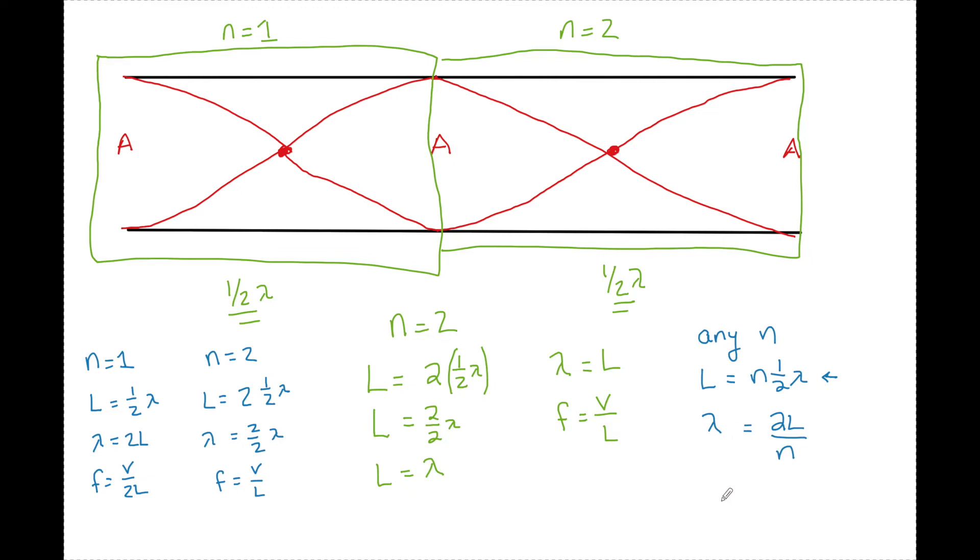Then for any single N, I know that the frequency is going to be equal to N times V over 2L. And how did I do that? Well, frequency equals V over lambda. So I took this lambda down here, 2L over N divided by V. So the N comes back to the top right here, and the 2L stays in the denominator right here.